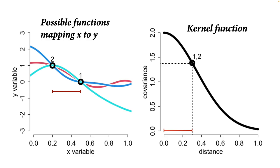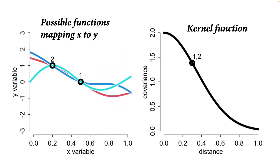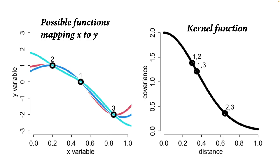There's a distance between points one and two — shown as a red line segment — and that same distance appears on the x-axis of the kernel plot on the right. The kernel function gives the expected covariance between two points at that distance via the black curve. This also applies to all unobserved points, constraining those wiggly functions so they can't wiggle as much at small ranges — it limits how fast the curve can change in local space. As we add more and more points we get more constraint about the function.